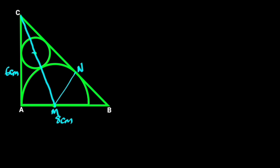Also, let's draw a perpendicular line from the center of the circle to the tangent AC, and another perpendicular line from the center of the circle through line AB. Let's call this point D, the center of the circle Q, and this point P. Let the radius of the circle be lowercase r, and the radius of the semicircle uppercase R.